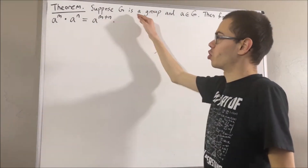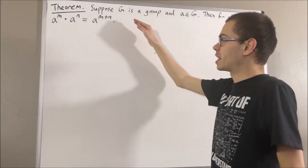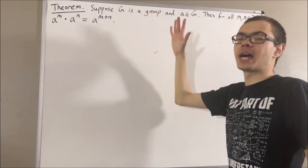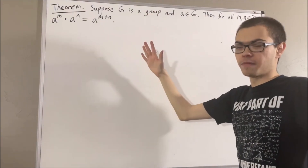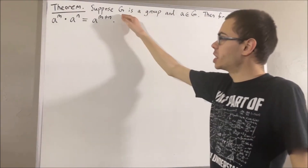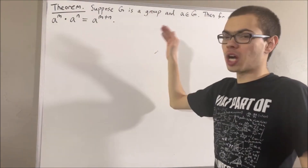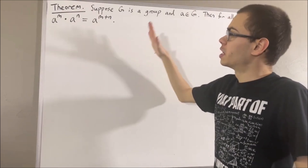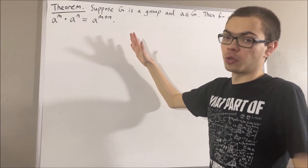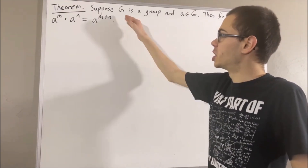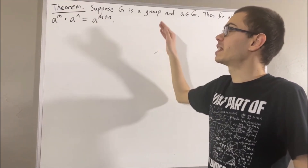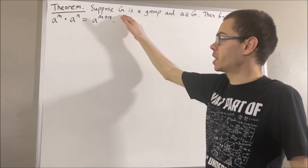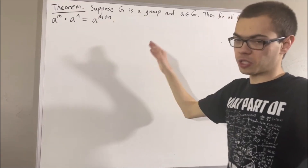Now since G is a group, this means that G is equipped with a binary operation. G is closed under that binary operation. Associativity holds. G has an identity element, and every element of G has an inverse.